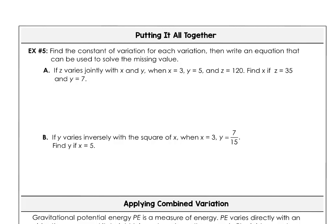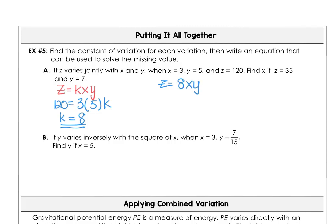In Example 5 Part A, z varies jointly with x and y. When x is 3, y is 5, and z is 120, we find k equals 120 divided by 15, which is 8. So the equation is z equals 8xy. To find x when z is 35 and y is 7: 35 equals 8 times 7 times x, so 35 equals 56x, and x equals 35 over 56, which is approximately 0.625.